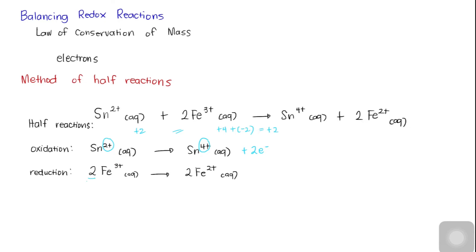For the reduction half-reaction, we will also do the same. The reactant side has a total of 6+ charge since we have two iron 3+ species, while on the product side the total charge will be 4+. If electrons are added on the product side for an oxidation reaction, it will be the opposite for a reduction reaction. So here, we will be adding two electrons on the reactant side to make the charges on both sides equal to 4+.